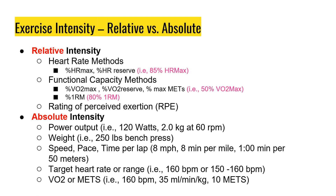Let's talk about exercise intensity — relative and absolute. You can prescribe intensity using relative intensity methods such as heart rate methods: percentage of heart rate max, percentage of heart rate reserve. For example, for this lab, 85% of heart rate max. Also functional capacity methods like percentage of VO2 max, percentage of VO2 reserve, percentage of max METs, and even percentage of one-rep max. You can also use Rating of Perceived Exertion — the RPE scale — as a relative way to prescribe exercise intensity.